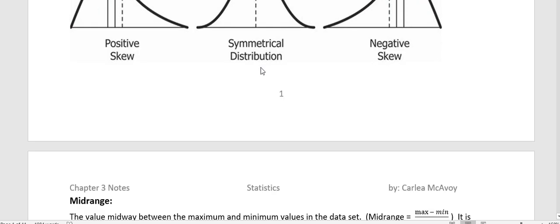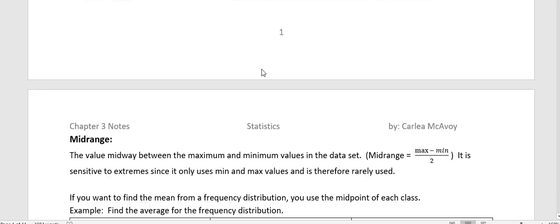The last one I want to talk about is the mid-range, and that's just the value midway between the maximum and the minimum values. To find the mid-range you take the maximum minus the minimum and divide by two.